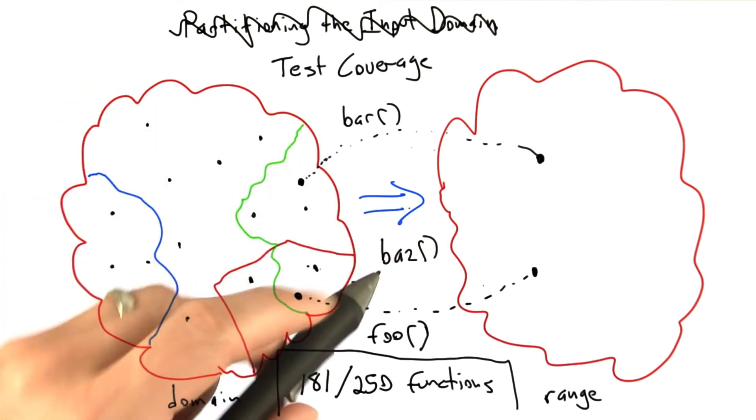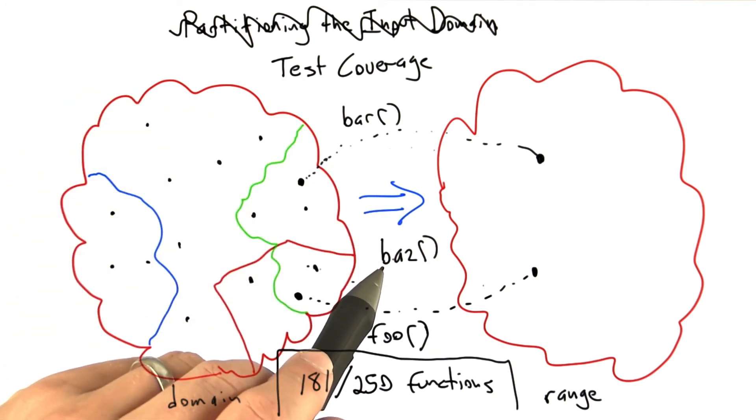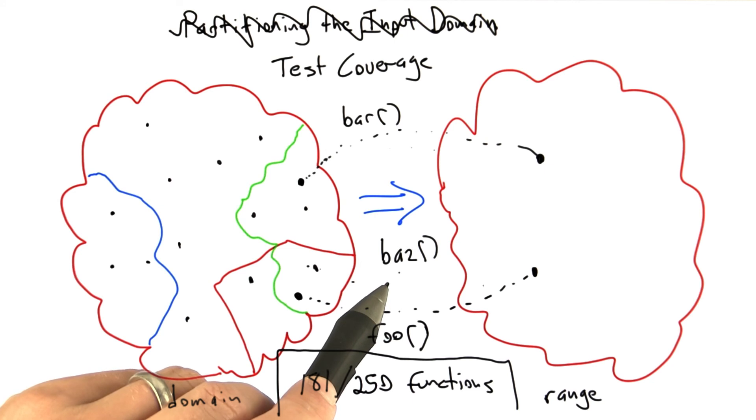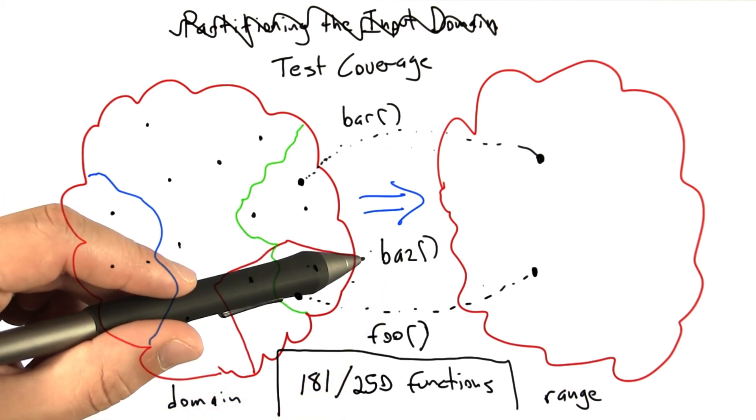If there's some function baz here, and we can't seem to devise an input that causes it to execute, then there are a couple of possibilities. One possibility is that it can't be called at all. It's dead code. Another possibility is that we simply don't understand our system well enough to be able to trigger it. Either way, there's something possibly suspicious or wrong.